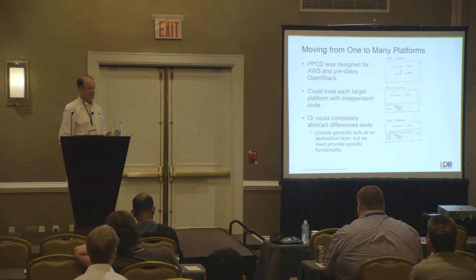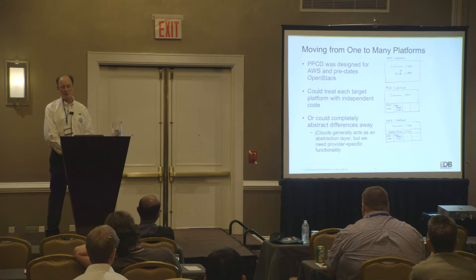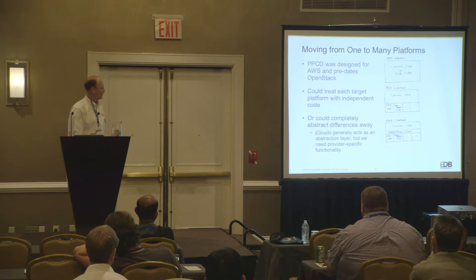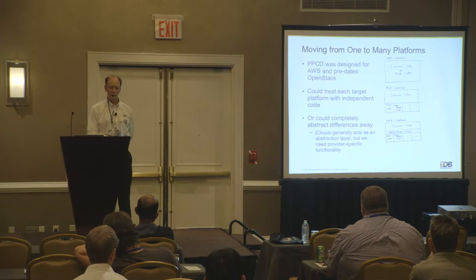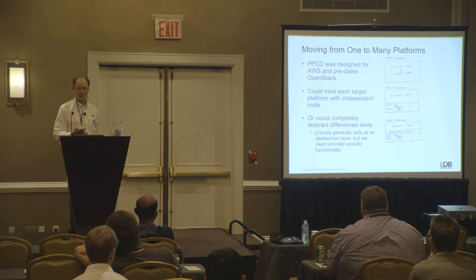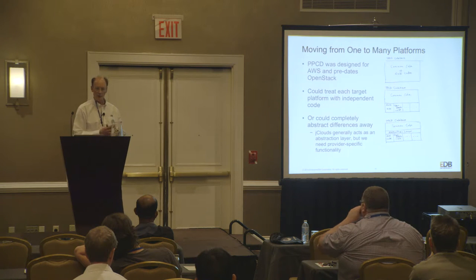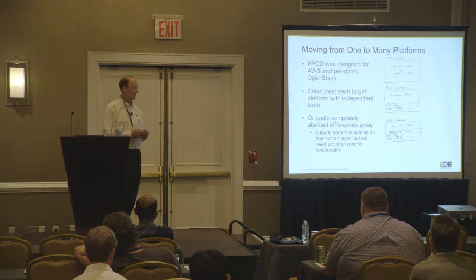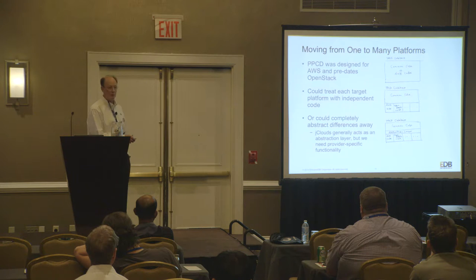When we sat down to change the code to allow our database to run on OpenStack as well as Amazon, we started with a product originally created about three years ago that was specifically built to work on Amazon. There is some abstraction there, but in general if you know your target, you do things specifically suited to that. This pictogram implies there's some common code across the system's functionality, and then some AWS-specific code in there.